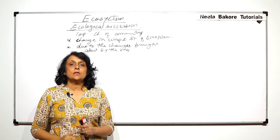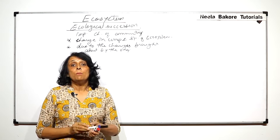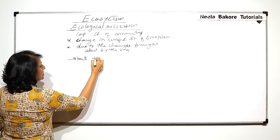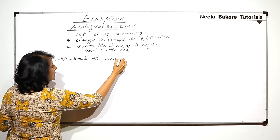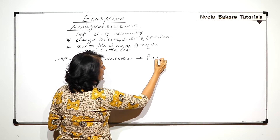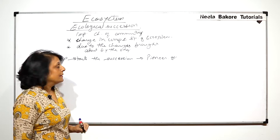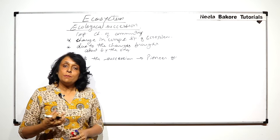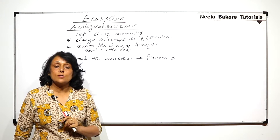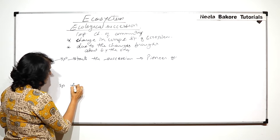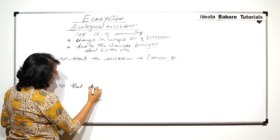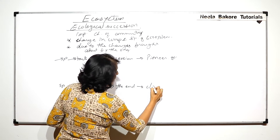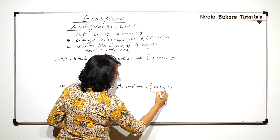When we talk about succession, it means one thing is replaced by the second, the second replaced by the third, and this is going to start somewhere. The species which starts the succession is known as pioneer species. The species which remains at the end — adapted in such a manner that it does not change — is known as climax species or climax community.